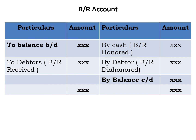For BR received, the entry is made in the BR account as well as the debtors account. Any cash received against BR appears towards the credit side of the BR account as 'By cash account' — when we receive cash against the BR, it is recorded towards the credit side. Similarly, like BR received, BR dishonoured is also a contra entry which affects both the BR account and the debtors account. BR dishonoured appears towards the credit side of the BR account as 'By debtors account,' and this contra entry will also appear in the debtors account as 'To BR account.'